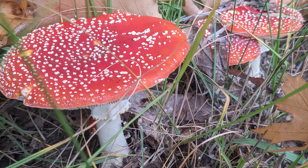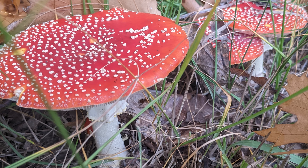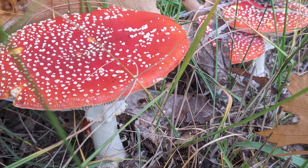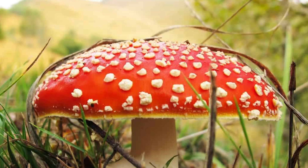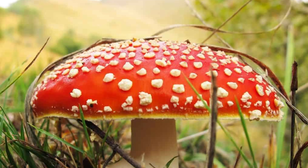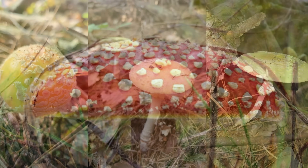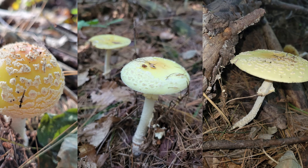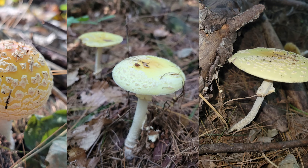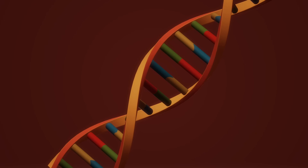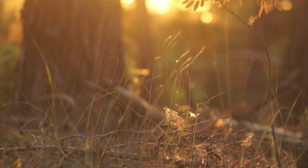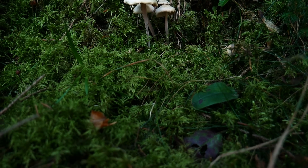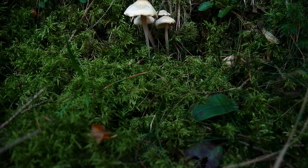When most people think of Amanita muscaria, they picture the classic fairy tale mushroom — a bright red cap with white warts. But in reality, this species is far more diverse. Its cap can also be yellow, orange, brown, or even white, depending on its geography, genetics, and local environmental conditions like sunlight, temperature, and soil type. Here are a few well-known forms.